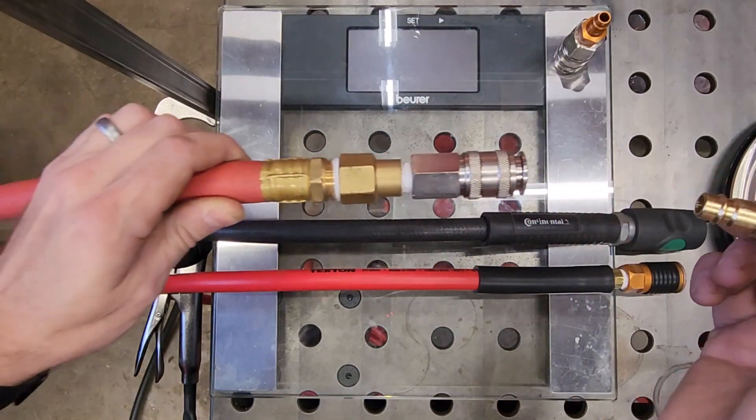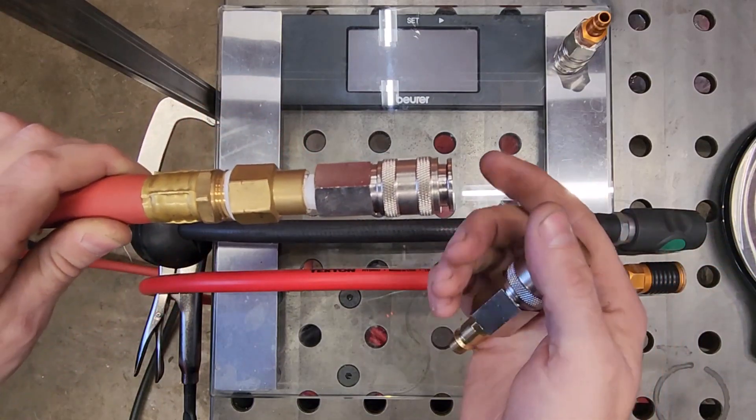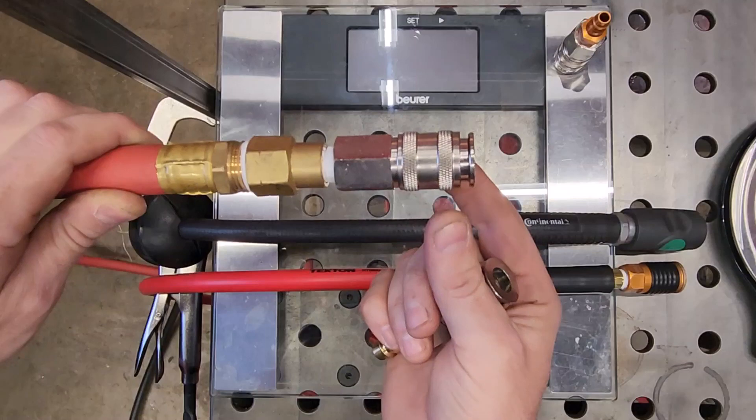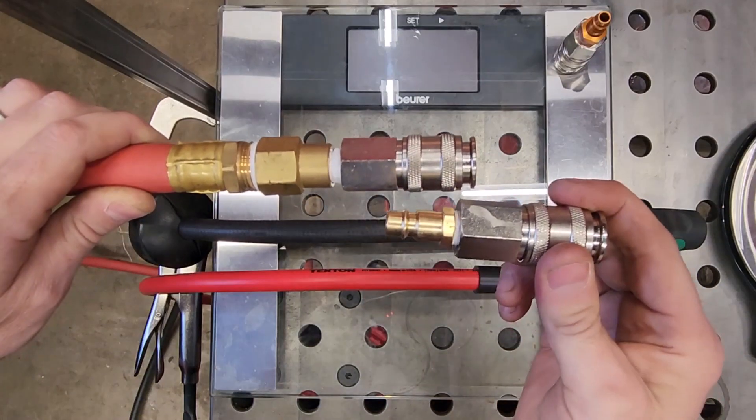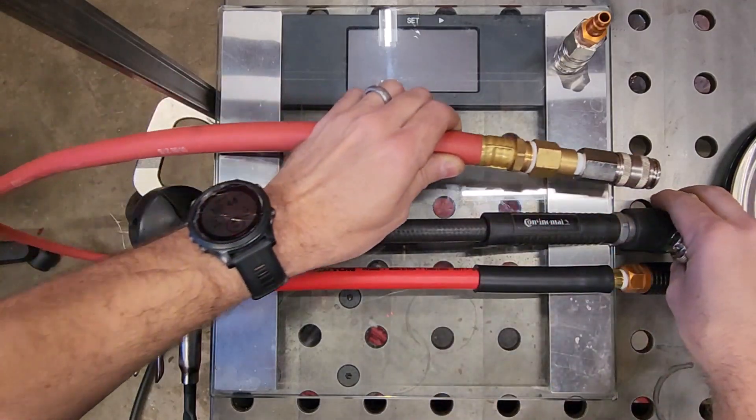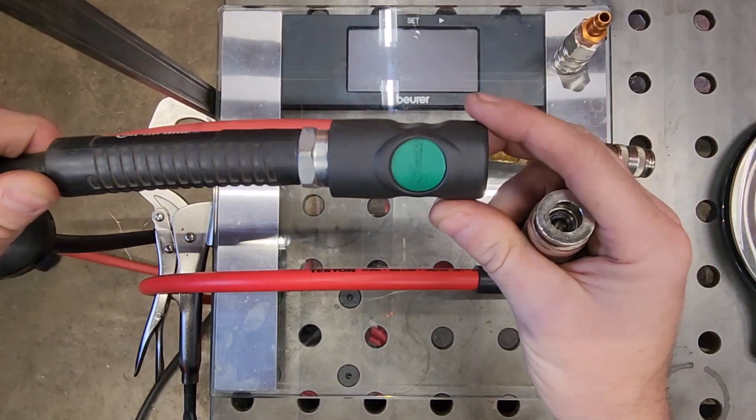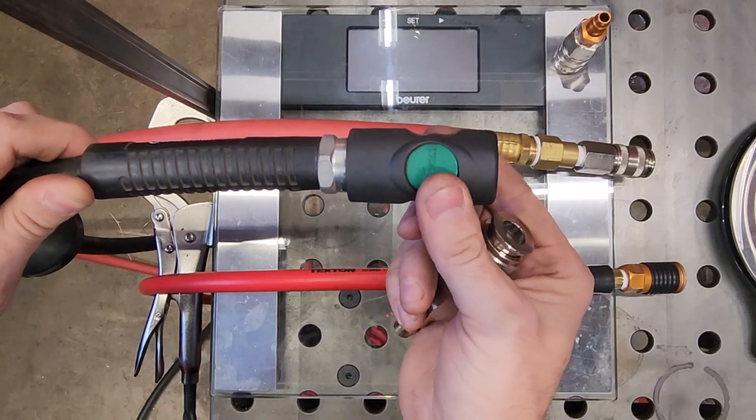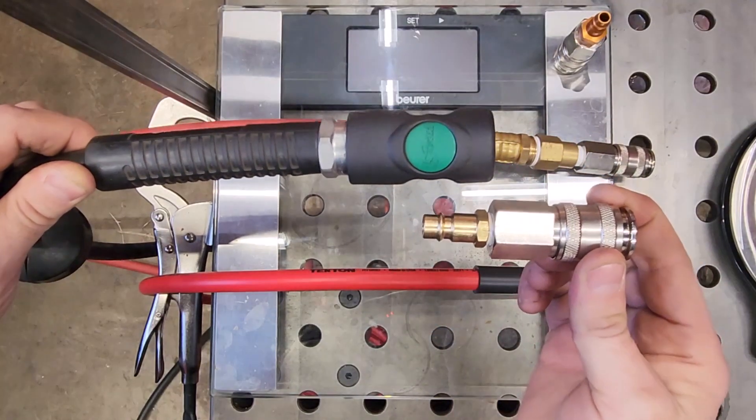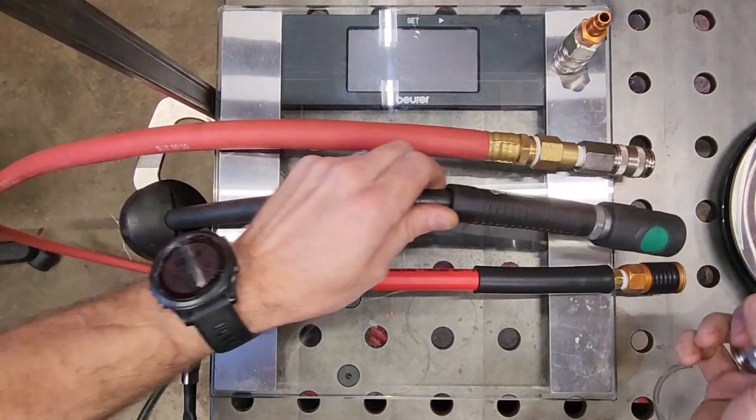I've got a couple different plugs here and a couple different couplers. So I've got a Milton Universal quick coupler, which accepts both the V-style plugs as well as the industrial plugs. I've got a Prevo high-flow safety coupler that also takes the V-style plug, so we're going to use the V-style plug for both of those.